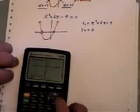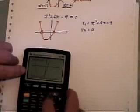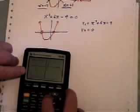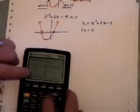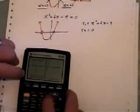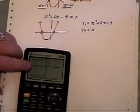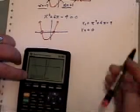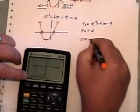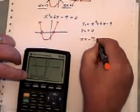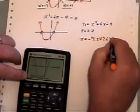Now I'm going to move my little cursor using the left arrow, moving it around until the two curves are almost on top of each other — it looks like a little bomb on screen. Then I hit the equal sign three times, and it pops out one of the answers: x equals negative 7.242641.